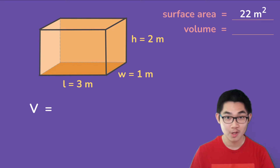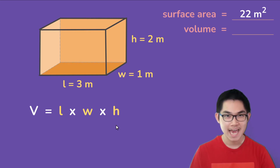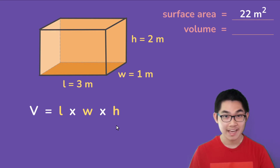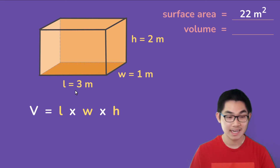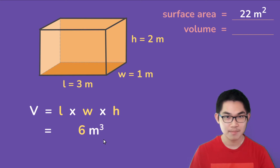Now, how about finding the volume of rectangular prisms? The formula to find the volume is length times width times height. If you watch my last video, I explain where the volume formula comes from, so check it out. We know the length is 3 meters, so we substitute that in, same for the width and the height.